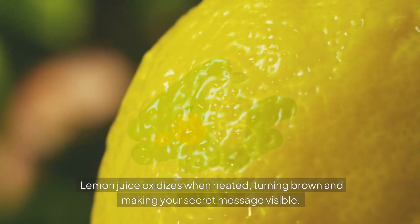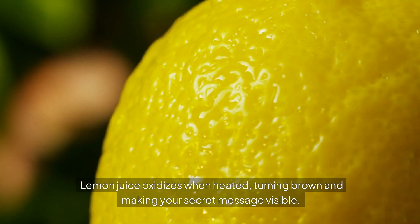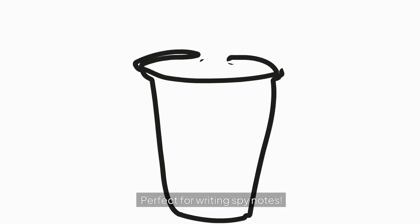Explanation: Lemon juice oxidizes when heated, turning brown and making your secret message visible. Perfect for writing spy notes.